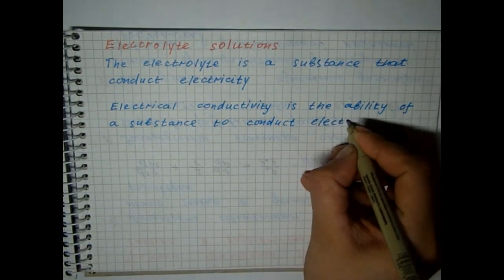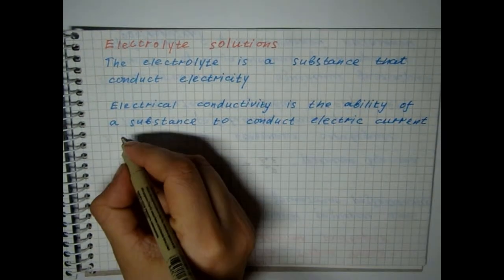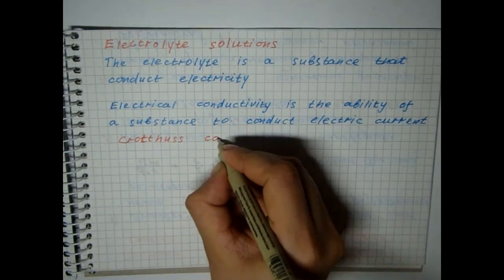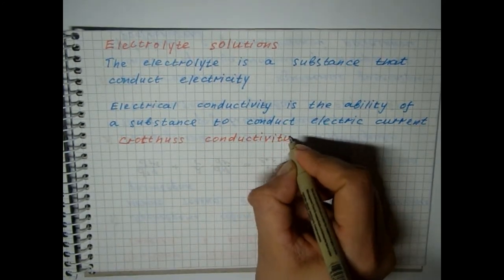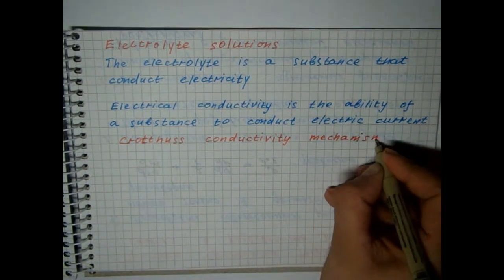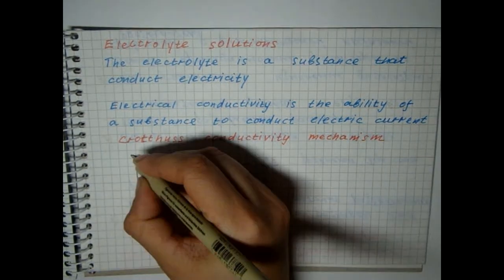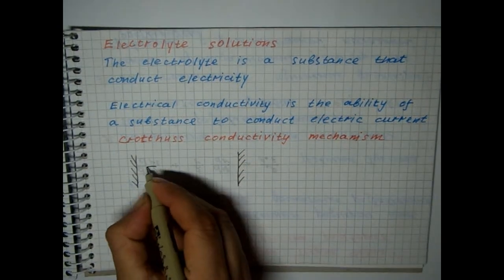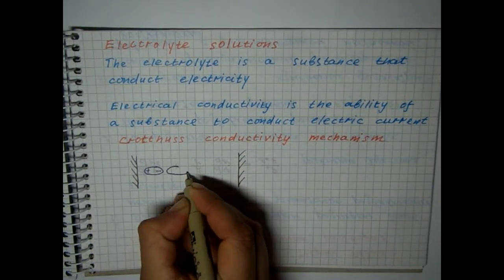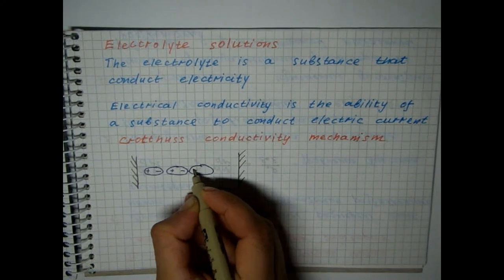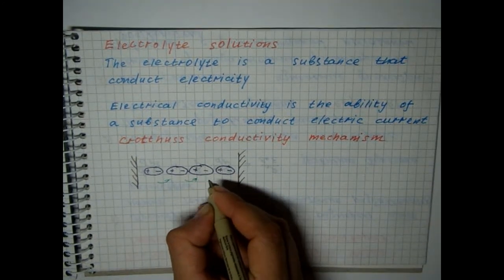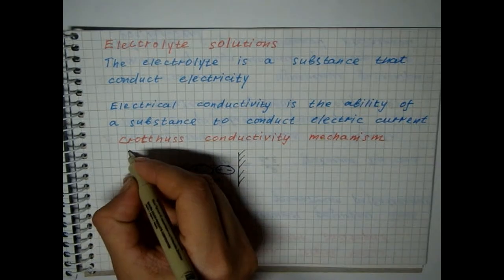But why does it occur in electrolytes? Theodor Grotthuss first tried to explain the reasons of electrical conductivity in electrolyte solutions. He represented the water molecules in the form of dipoles located in a chain between the cathode and anode.